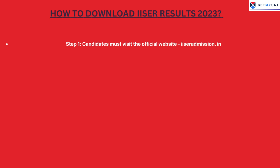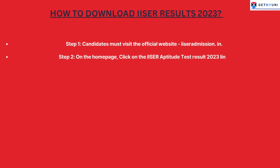Step 1: Candidates must visit the official website ISER admission. Step 2: On the homepage, click on the ISER Aptitude Test Result 2023 link.